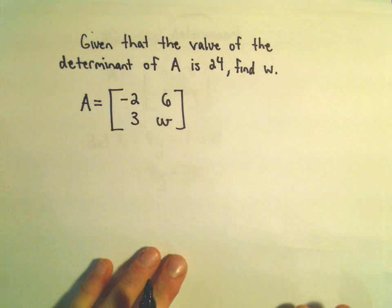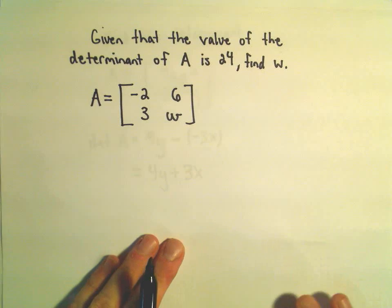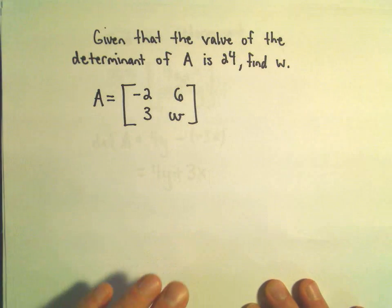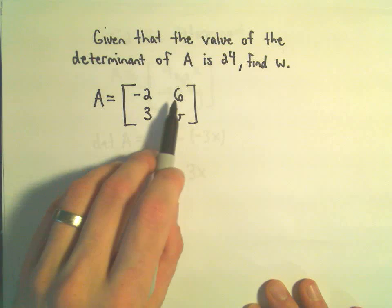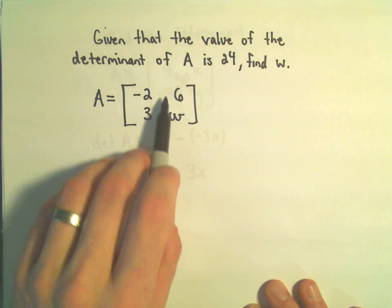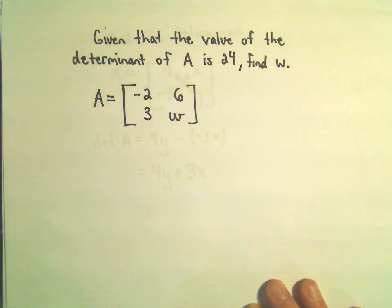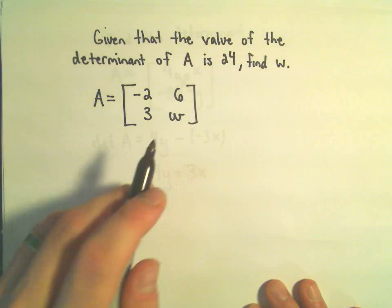One last quick one here. Suppose we know that the value of the determinant of this matrix is 24. We've got negative 2, 6, 3, and w. If we know this determinant of this matrix is 24, we want to figure out the value for w.